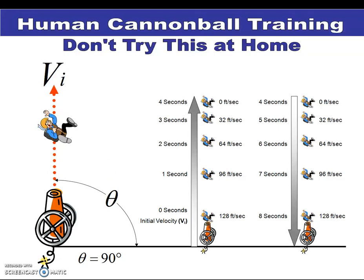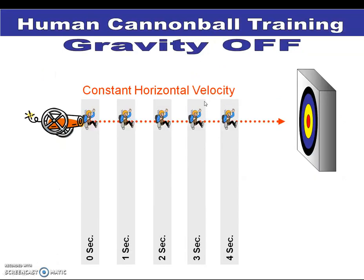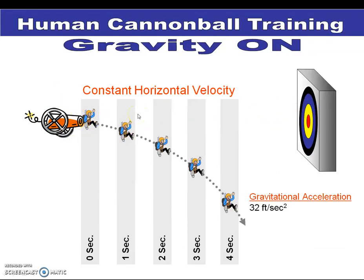If you shoot it straight up where the angle is 90 degrees, it will shoot up, fly up, come back down — half the time going up and half the time coming down. That's a very easy math problem. If you shoot it horizontally, it's going to bend in a nice little parabola, with gravity slowly pulling it down faster and faster.